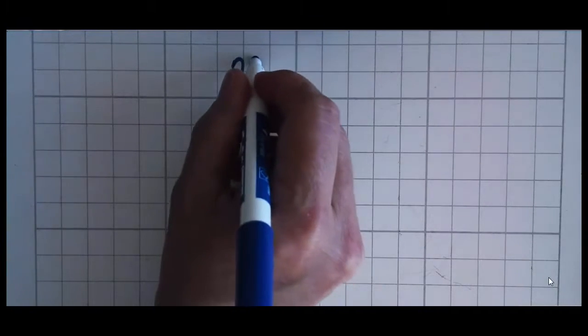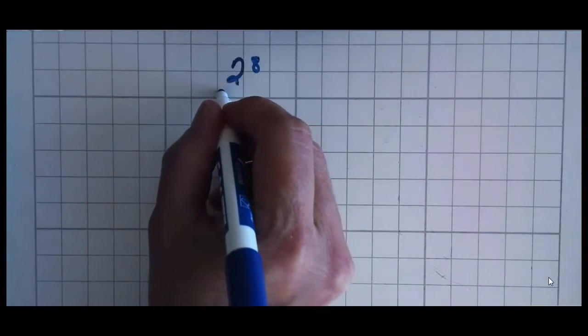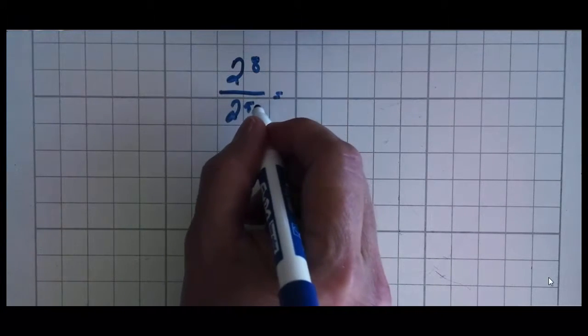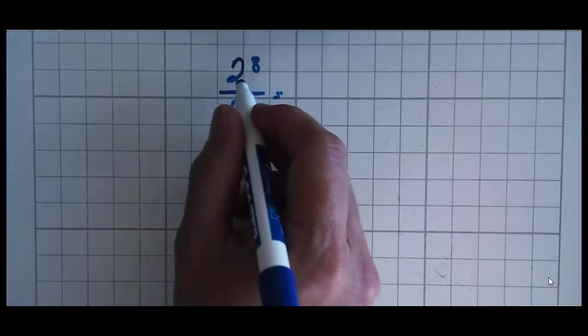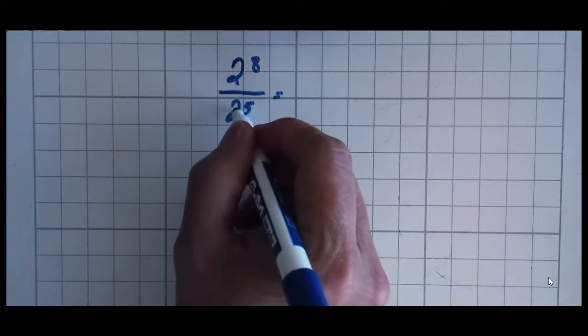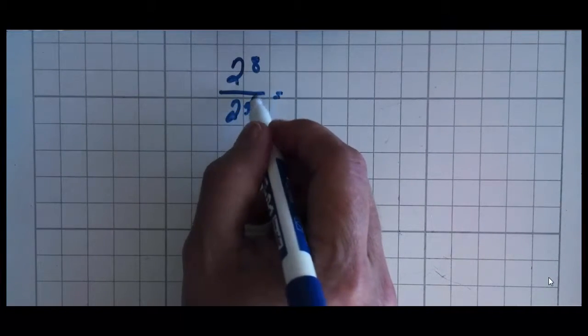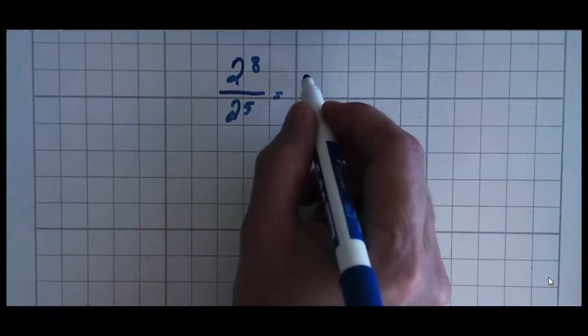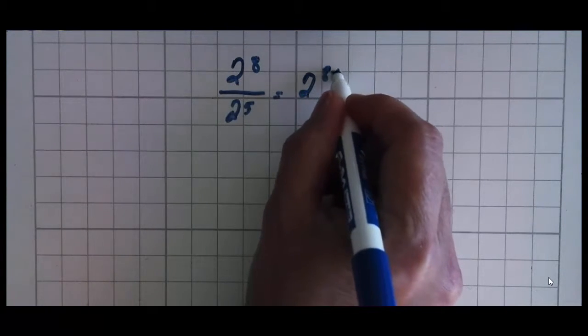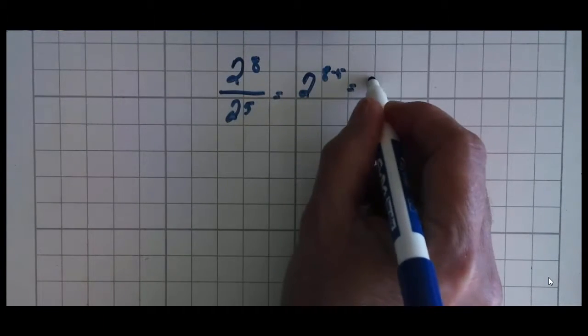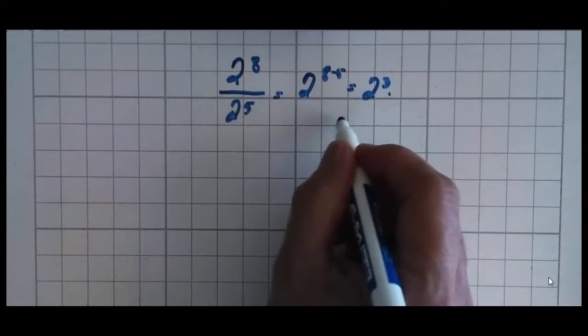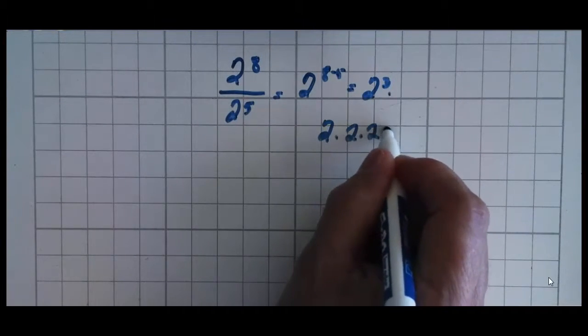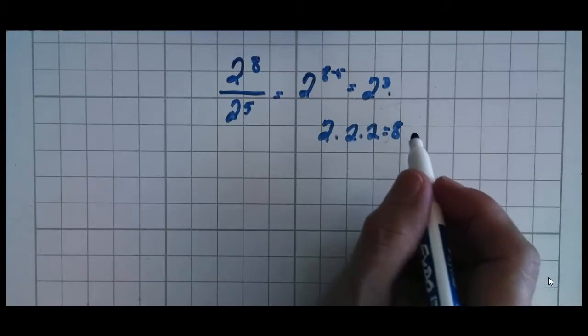If we have a problem like 2 to the 8th divided by 2 to the 5th, it's a pretty easy problem to solve because when you have the same base, in this case 2, all you do is subtract the bottom exponent from the top. So this becomes 2 to the 8 minus 5. 8 minus 5 is 3, and that is 2 times 2 times 2, which equals 8, and that's your answer.